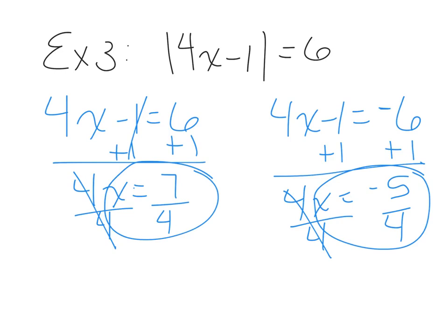One thing to draw your attention to: the first answer is 7 over 4, not negative 7 over 4. Very seldom are the two solutions the same number with opposite signs. Many students take a shortcut and assume the second solution is just the negative of the first — that is generally not the case. You must set up two different equations, because these do not usually turn out to be negatives of each other.